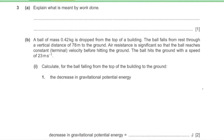Question 3, part A: explain what is meant by work done. Work done equals force multiplied by displacement, where the displacement must be in the direction of that force.